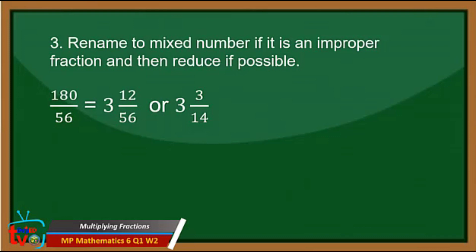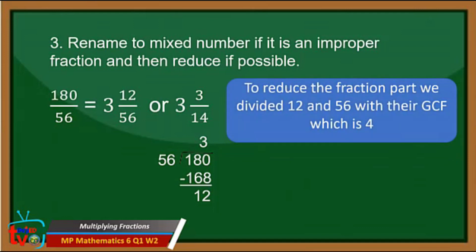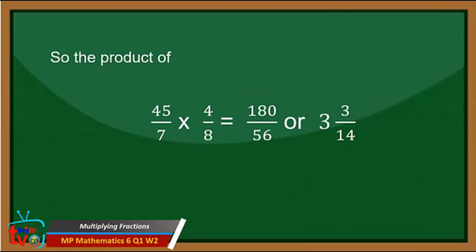Change the improper fraction to a mixed number by dividing 180 divided by 56. 180 divided by 56 is equal to 3. 3 times 56 is equal to 168. 180 minus 168 is equal to 12. So 180 over 56 is equal to 3 and 12 over 56. To reduce the fraction part, divide 12 and 56 by their GCF which is 4. So 12 divided by 4 is equal to 3, and 56 divided by 4 is equal to 14. So the product of 45 over 7 times 4 over 8 is equal to 3 and 3 over 14.